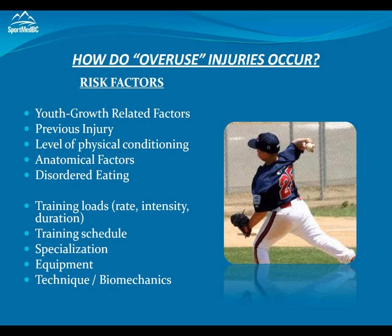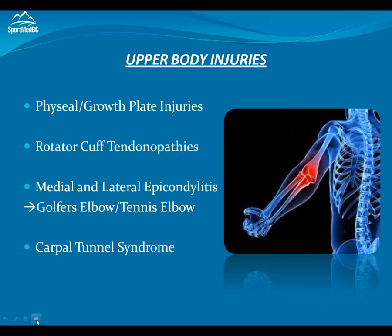Equipment is another big factor — if we're using the wrong equipment, something too heavy, too large, or not supportive enough, we are more susceptible to injury. And of course, technique and biomechanics has a lot to do with predisposal to injury as well. Now I want to go through some common upper body injuries: we'll look at growth plate injuries, rotator cuff injuries, golfer's elbow and tennis elbow, carpal tunnel syndrome, and then I'll get into some lower body injuries.